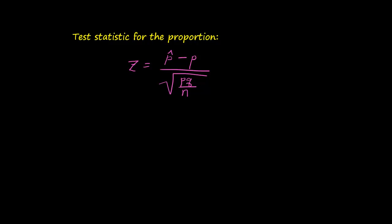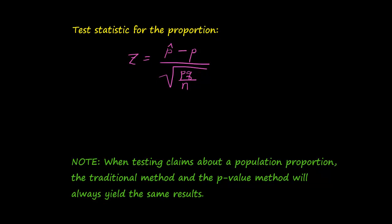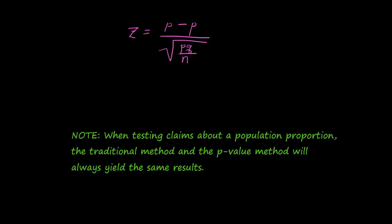A couple of things to note. When we test claims about a proportion, the traditional method is to compare your test statistic to the critical value. If the test statistic falls in the critical region that is bordered by the critical value, we reject the null hypothesis. If it does not fall in that critical region marked by the critical value, then we fail to reject the null hypothesis. So that's one method.